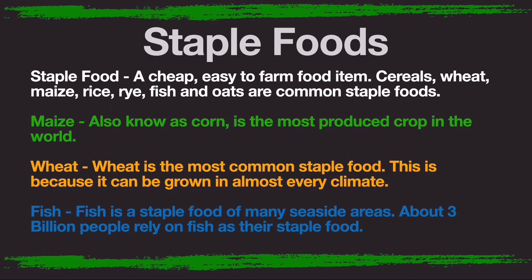Staple foods. Staple food is a cheap, easy to farm food item. Cereals, wheat, maize, rice, rye, fish and oats are common staple foods. Here are the three main ones. Maize, also known as corn, is the most produced crop in the world. Wheat is the most common staple food, because it can be grown in almost every climate.